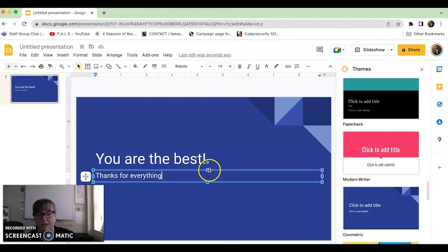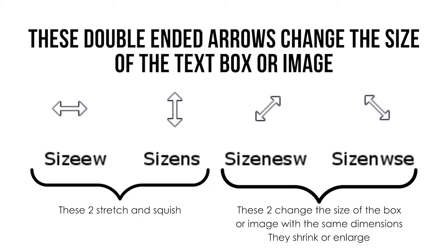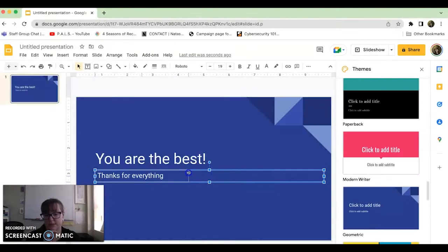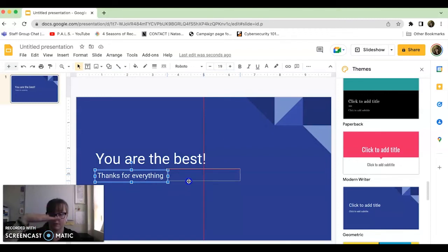Text boxes let you change the size and shape. This program will actually help you line everything up nicely. If you go to the end corner you get a diagonal arrow, which means you'll shrink or grow the whole box. Go to the middle arrow and it goes side to side. You can pull it in to fit your text. When you move the box, a red line appears meaning it's centered perfectly between left and right.